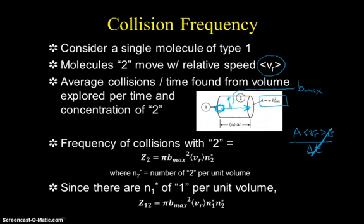That gives us the average volume that's swept out by these particles. If we multiply that by the concentration, the number of molecules of type 2 per unit of volume, that tells us the number of collisions on average we would expect. That's Z_2, the frequency of collisions of this one particle of type 1 with all particles of type 2, given by π b_max² times the average relative velocity times the concentration of molecules of type 2 per unit volume.